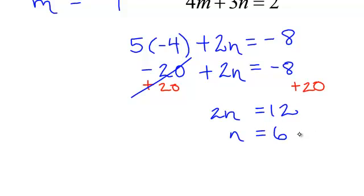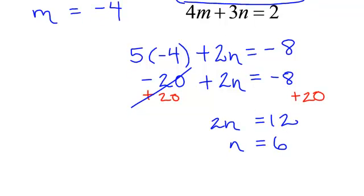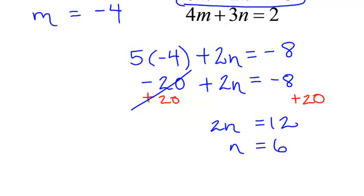And we will put this in alphabetical order. So our m is negative 4 and our n is 6. That will be the ordered pair, negative 4, 6.